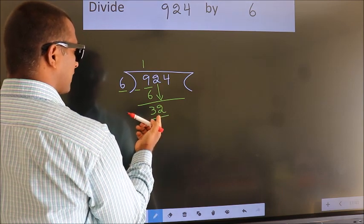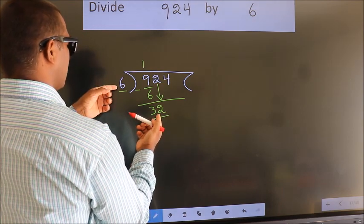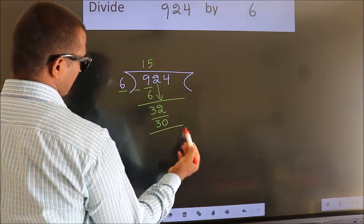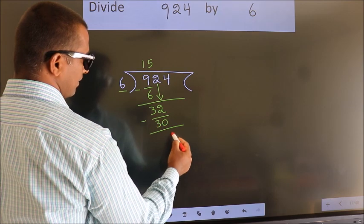A number close to 32 in 6 table is 6 5s 30. Now we subtract. We get 2.